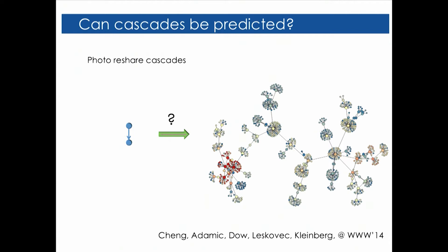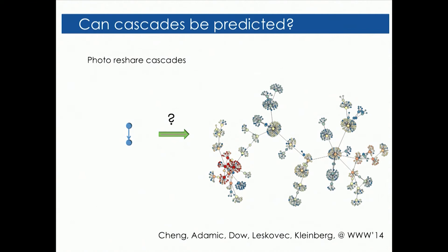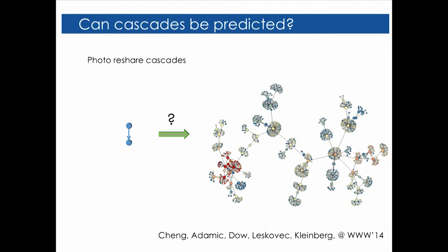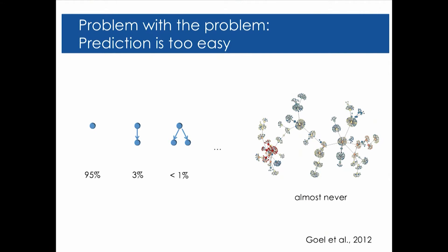Could we have predicted that so many people would post what they're grateful for? In general, if we take publicly uploaded photos, could you predict which ones are going to generate a very large cascade — meaning it's uploaded, someone shares it, someone else reshares, et cetera? The problem is not well formulated because the vast majority of things online never propagate. You could just say no and be right most of the time. However, the things we tend to see tend to be the more popular, less frequently occurring but very broadly distributed items.